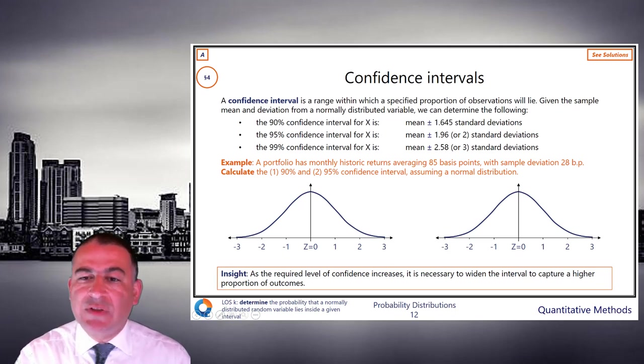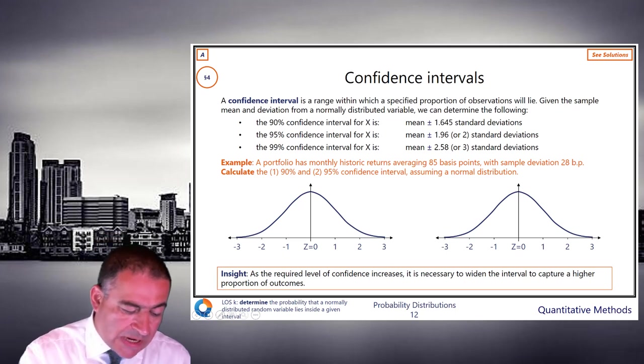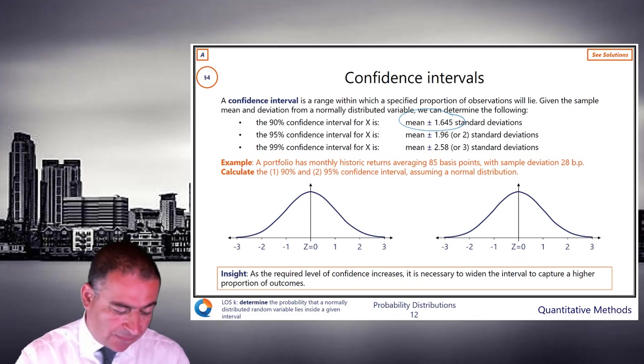Which is 113 basis points. So have a go at those two. See what you make of it. Let's see what we've got. 90% we need to take the mean plus or minus 1.645.